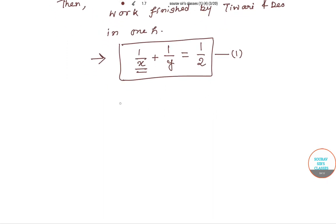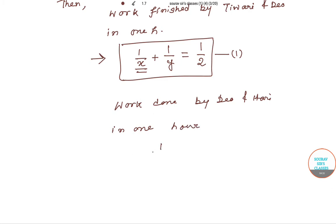Work done by Dio and Hari in one hour gives us: 1/Y + 1/Z = 1/6. We label this as Equation 2.